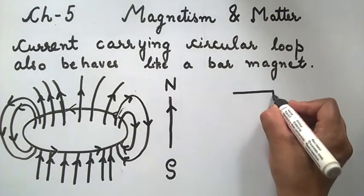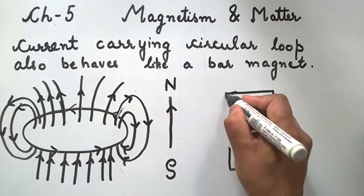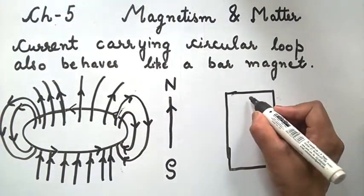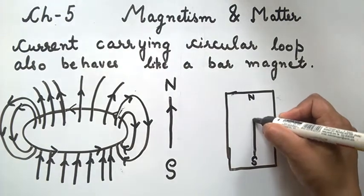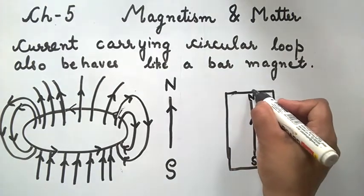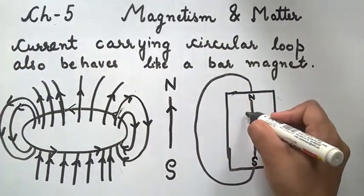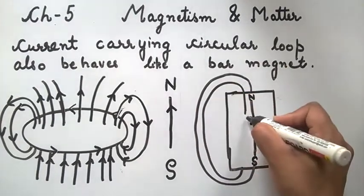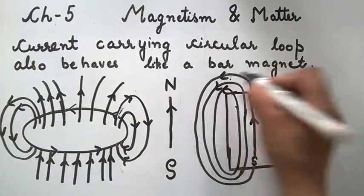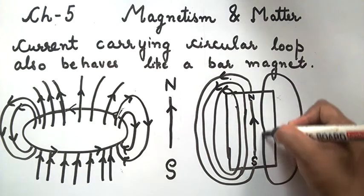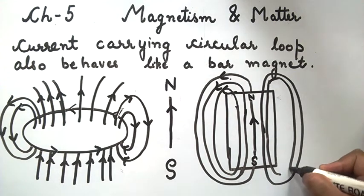We will compare the magnetic field lines of this circular loop with the magnetic field lines of a bar magnet. Let us suppose this is the north pole of a magnet and this is the south pole of a magnet. Then the magnetic field lines are travelling from south to north inside the magnet, and emerging out from the north pole and merging into the south pole. These are the continuous closed curves formed by a bar magnet, which are similar to the magnetic field lines formed by a circular loop.